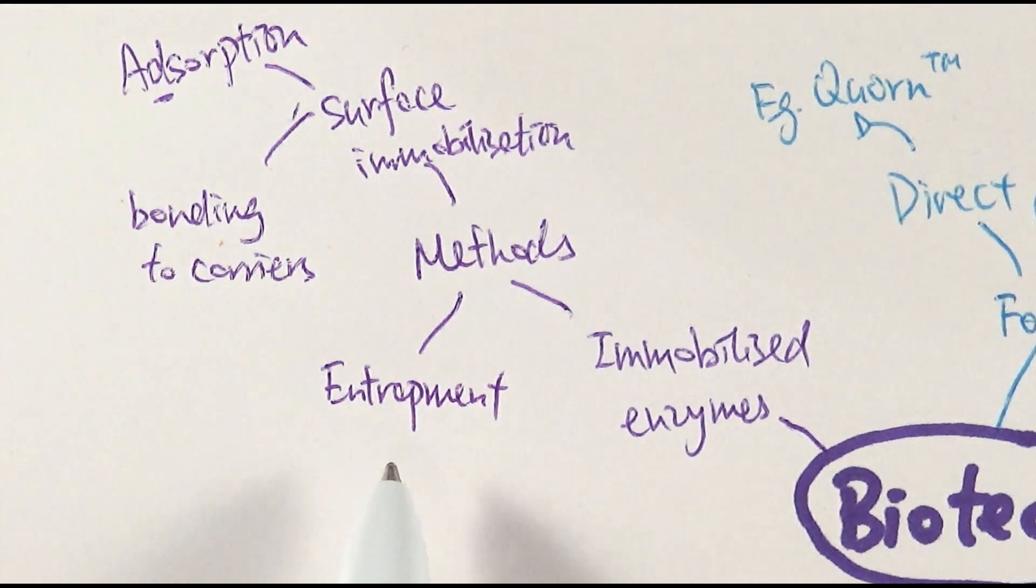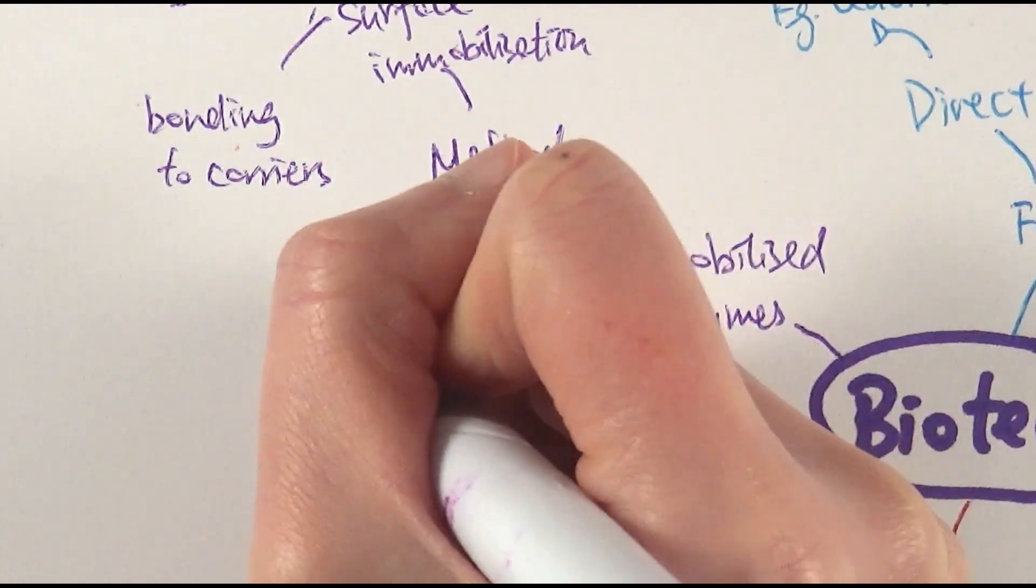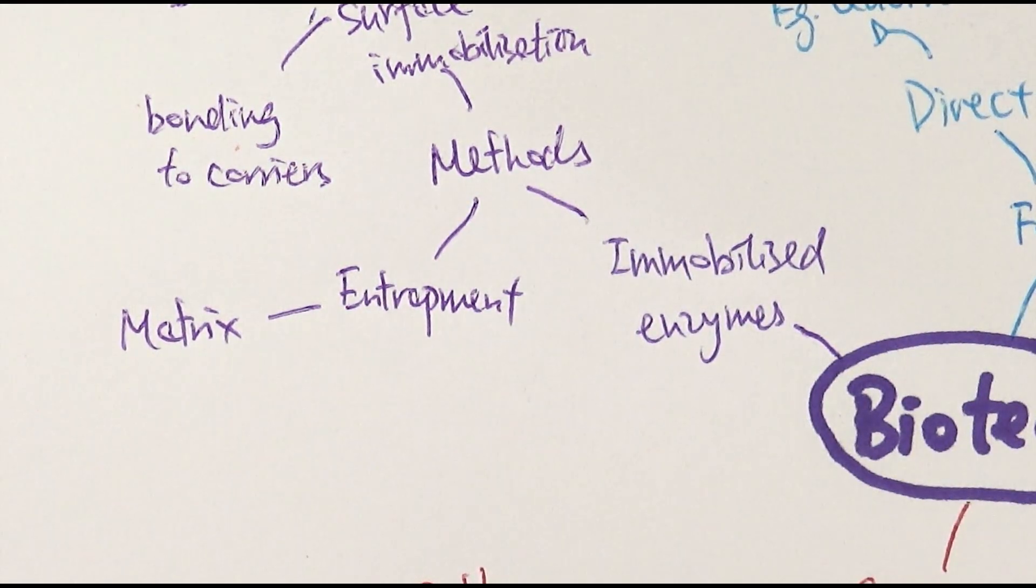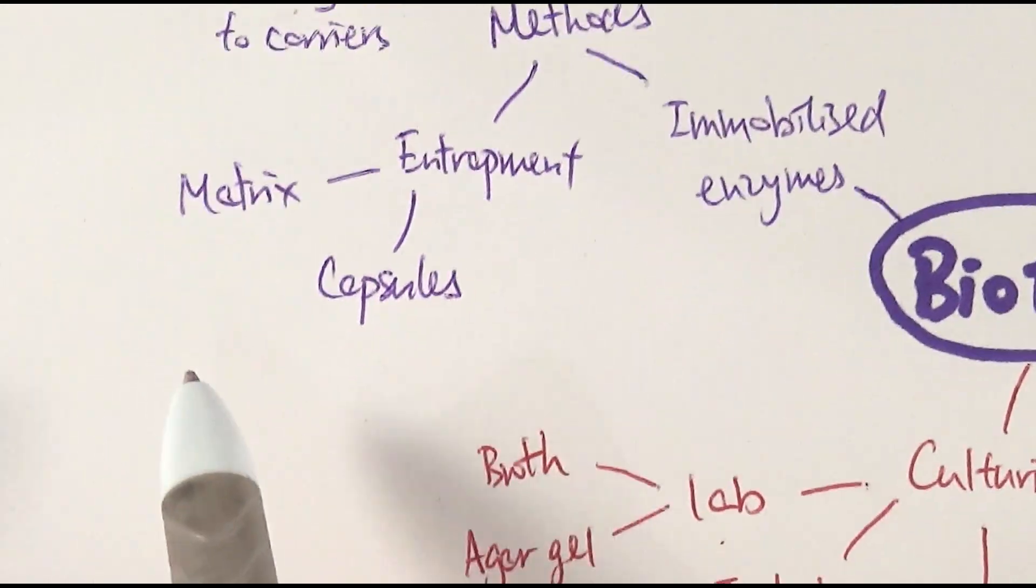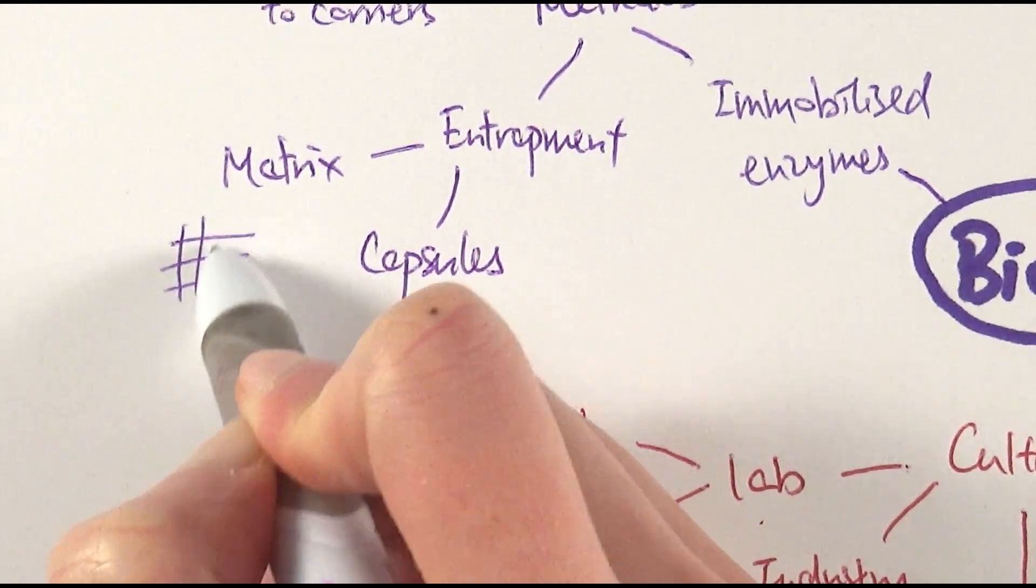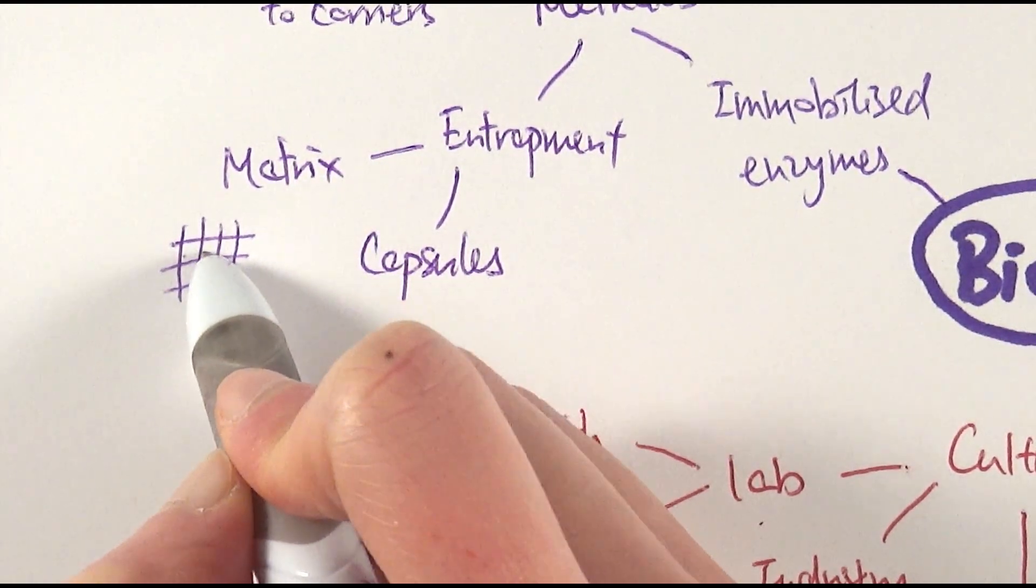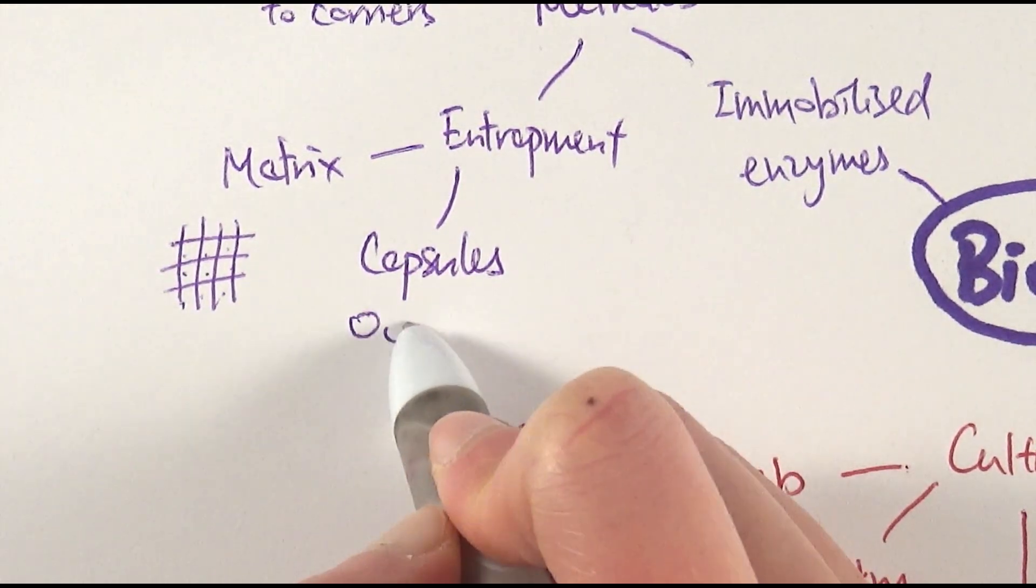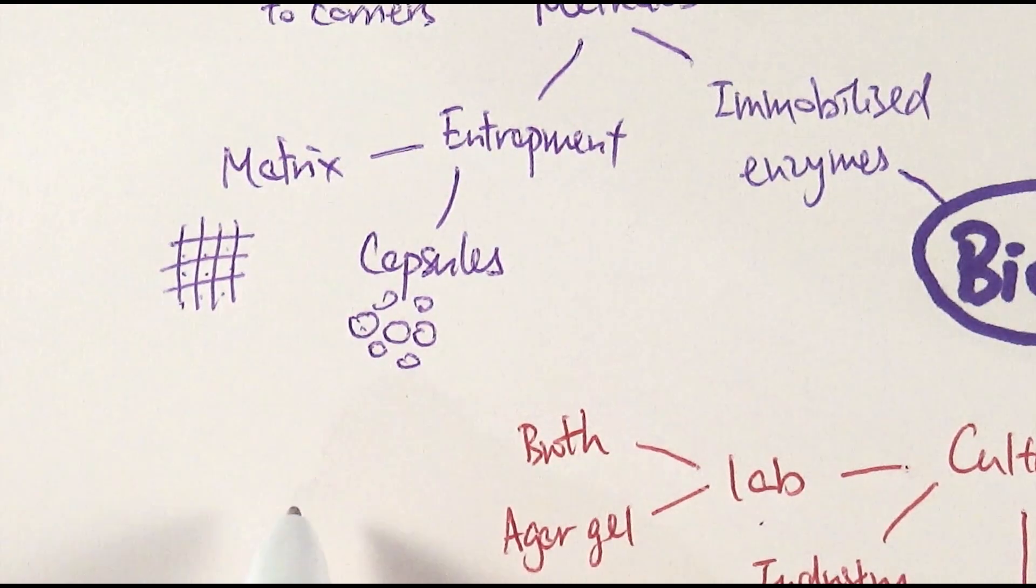The other group of method is called entrapment. As the name implies, you're putting the enzymes, trapping it into certain substances. There are two ways to do this. Number one is trapping them in the matrix, almost like a lattice. Or the other one would be trapping the enzymes into capsules, like beads. A matrix is sort of like you can have wells, different fibers that become like a well, and you can have the enzymes trapped in between those fibers, the gaps in between. Whereas for a capsule you've got lots and lots of beads, and the enzymes are all trapped inside those beads.